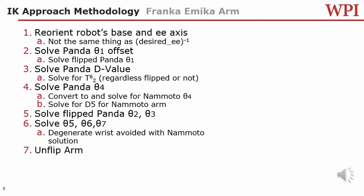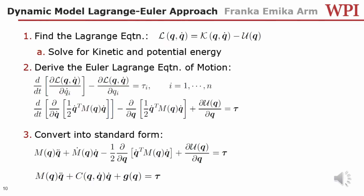Once we have thetas 1 through 7, we now have to unflip the arm. This means that theta 1 is theta 7, theta 2 is theta 6, and so on. Now we can then plot the Panda.